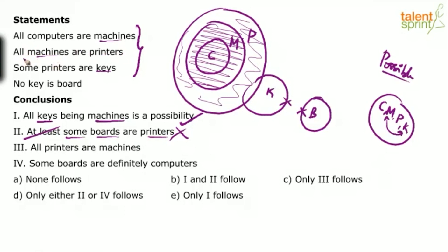For all A's are B's, the definite conclusion is some B's are A's. So all machines are printers means some printers are machines, but we cannot say all printers are machines. So the third conclusion is wrong.